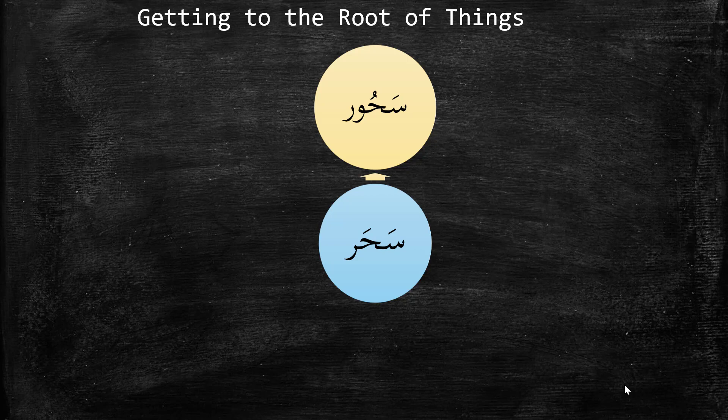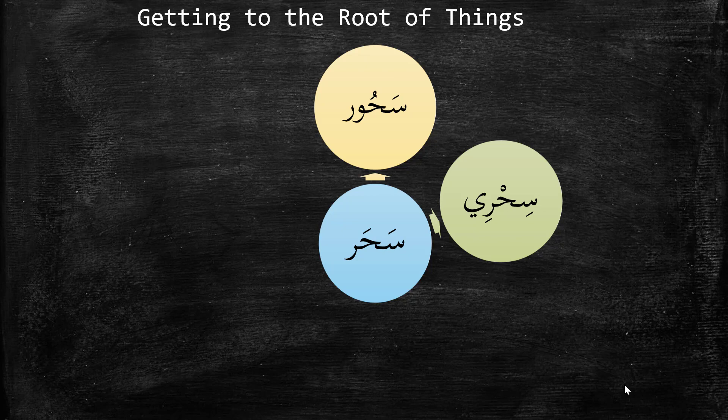The next word is 'Sihri.' We can see the addition of a ya. Sihri means 'magical,' so this is actually an adjective — which is one of the things that an ism can be, which is why 'noun' isn't really a great translation for the word ism, though it's a rough translation. So Sihri means magical.